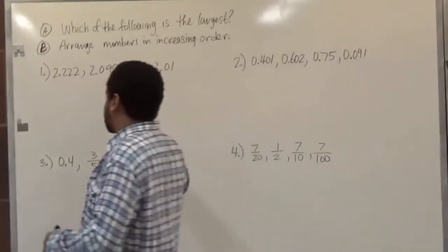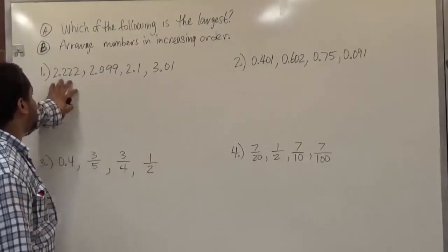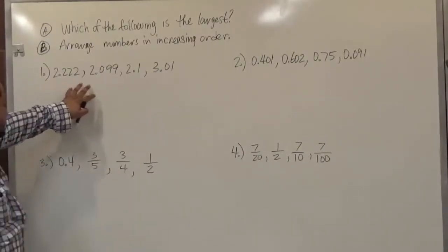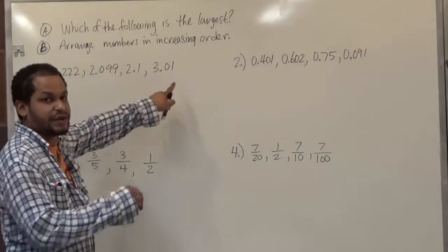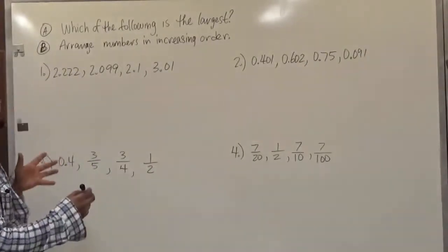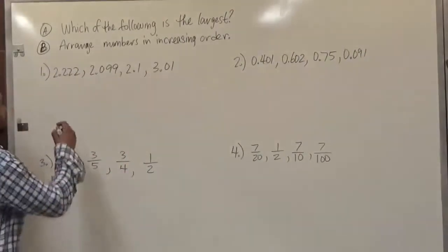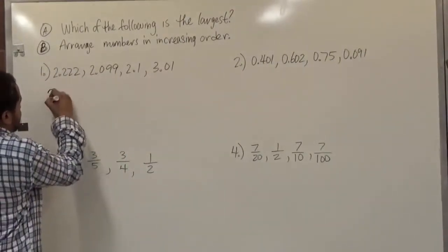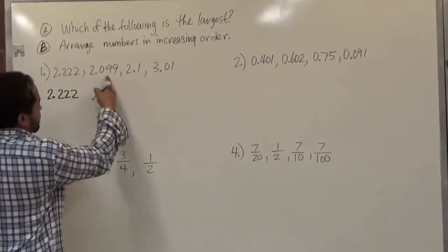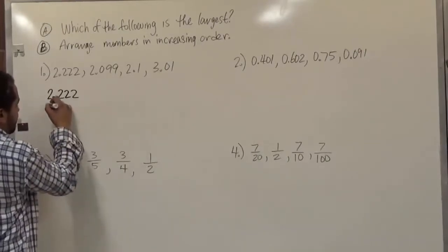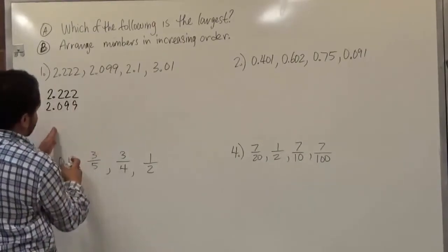For our first task, we're going to find a routine that we can use to make this easier for ourselves. We have a number here that has a thousandths place, another with a thousandths place, one with a tenths place, and one with a hundredths place. The first thing we want to do is complete the missing numbers for each of them by adding placeholders. Since this is a four-digit number, we're going to try to make them all look the same with three places after the decimal point, and align them right by the decimal point.